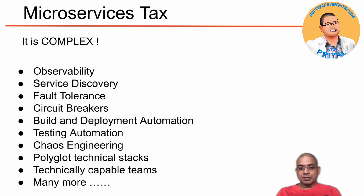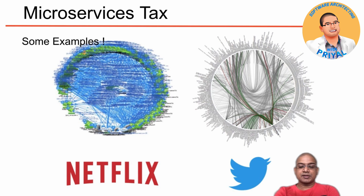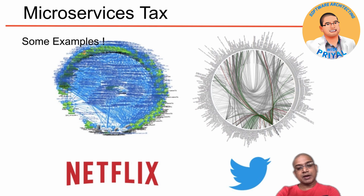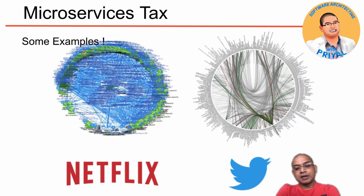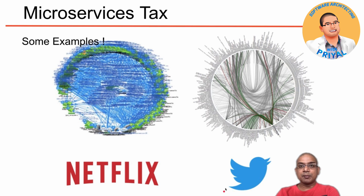Let us examine some examples of implementations of microservices architecture. I have taken the Netflix architecture and the Twitter architecture. Both of these companies use microservices at their base. You can see how complex it is — what is supposed to be a simple architecture diagram that anybody can understand has become very complex in both these companies.